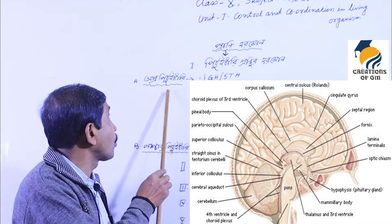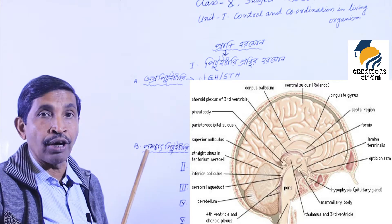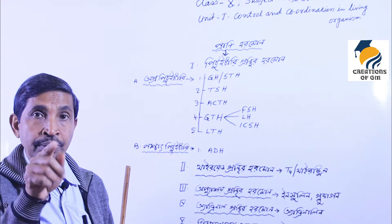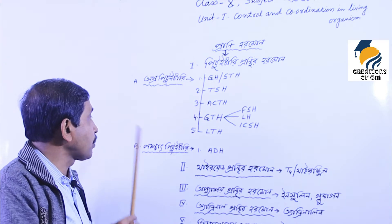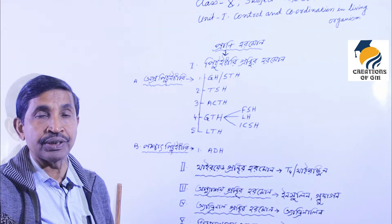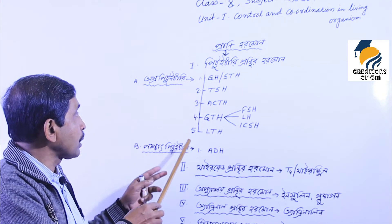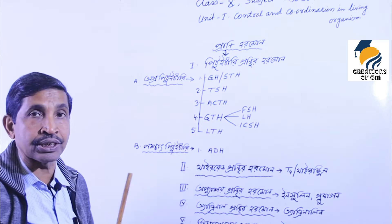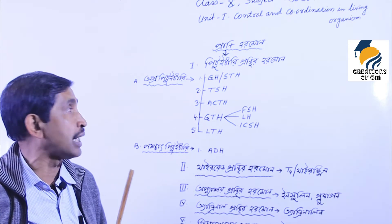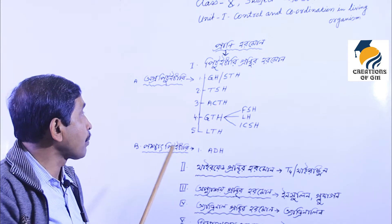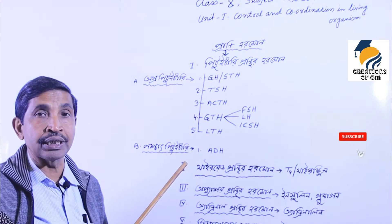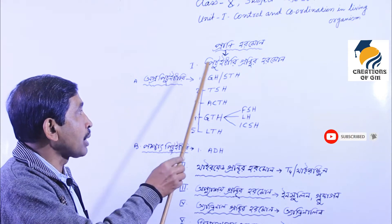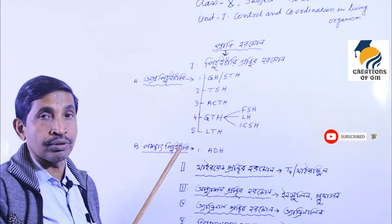The pituitary has two parts: anterior pituitary — adenohypophysis — and posterior pituitary — neurohypophysis. Hypophysis means pituitary gland. From the anterior pituitary (adenohypophysis), several hormones are secreted. Let us now discuss which hormones are secreted from the anterior pituitary gland.